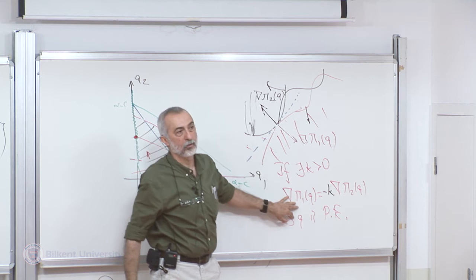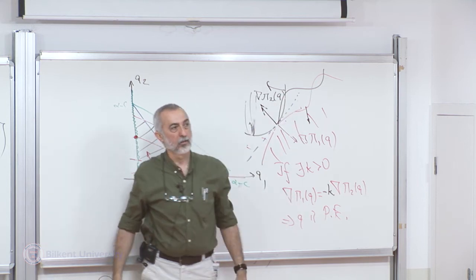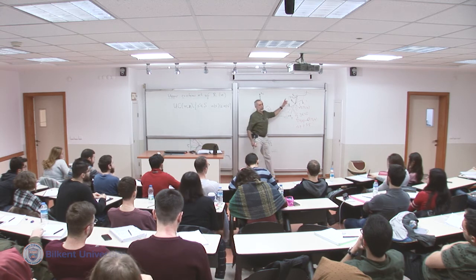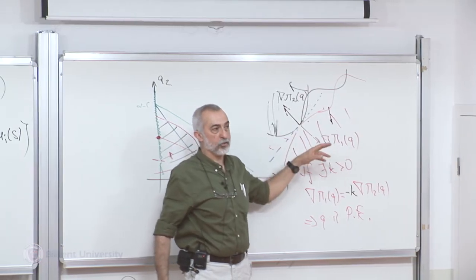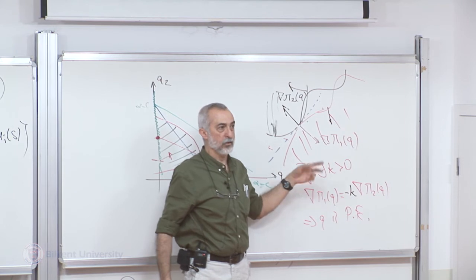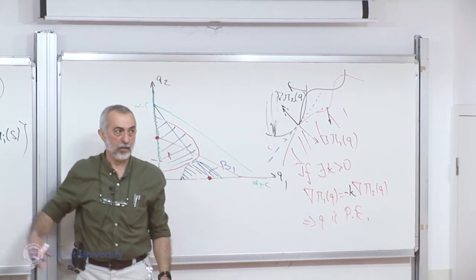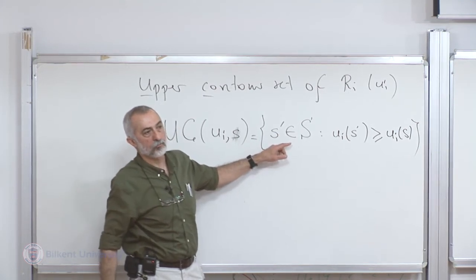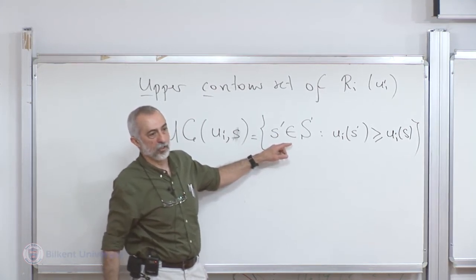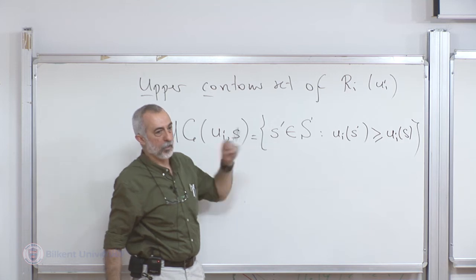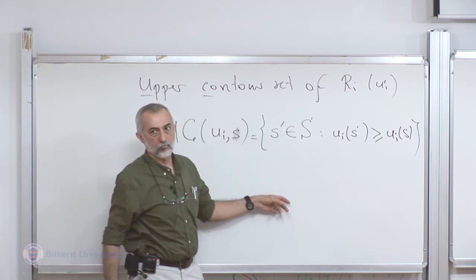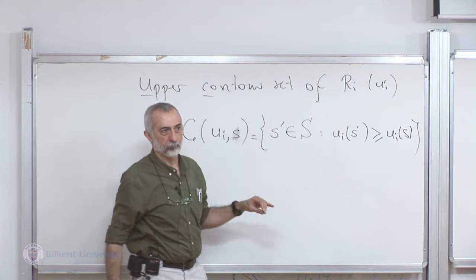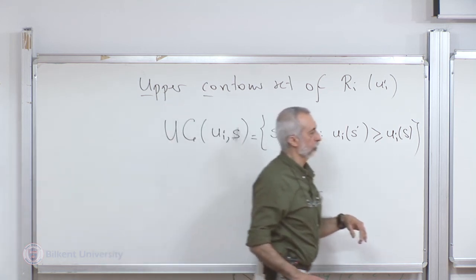This works when the upper contour sets of the preference relations of each agent are convex — that is, when each agent has a numerical representation which is quasi-concave.